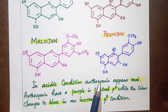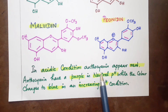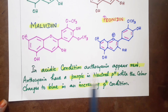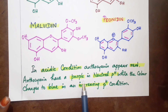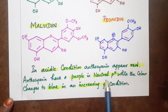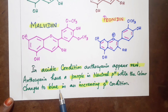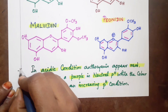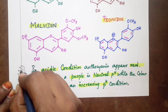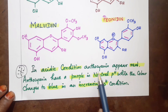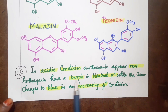Another important point: in an acidic medium, anthocyanin appears red. In neutral pH, anthocyanin appears purple, and at neutral pH it can also show a little yellow. As pH increases toward basic conditions, the color changes to blue. So the color of anthocyanin changes with pH — red in acid, purple at neutral, and blue in base.